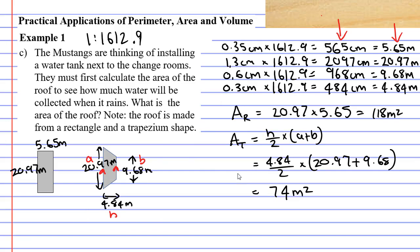Now that we've done that, we need to find the total area of the roof. We just add our two areas up: 118 plus 74 equals 192 square metres for the area of the roof. That concludes example one. Remember to read the description below for links to workbooks that relate to this video.